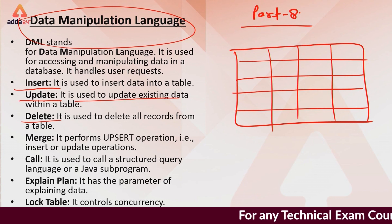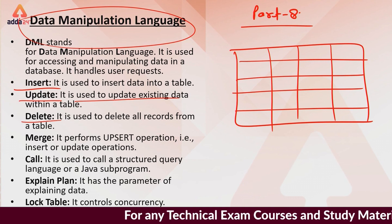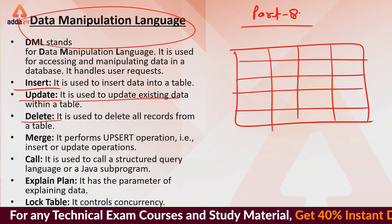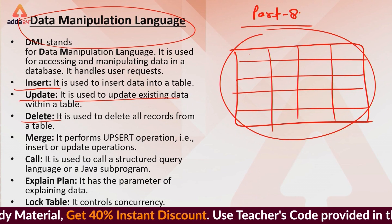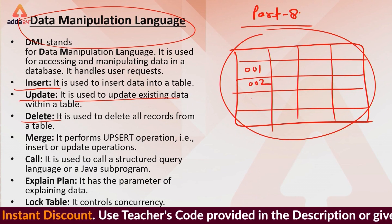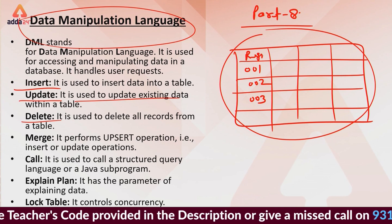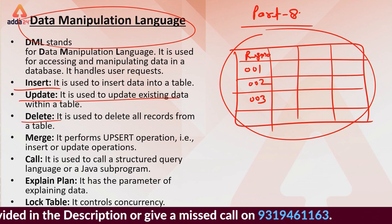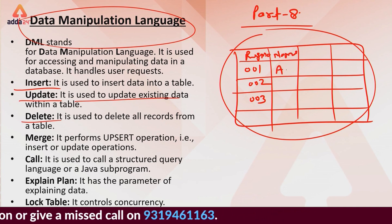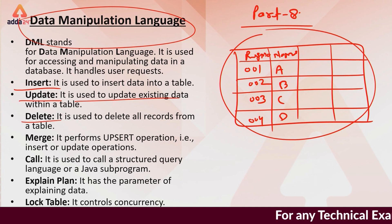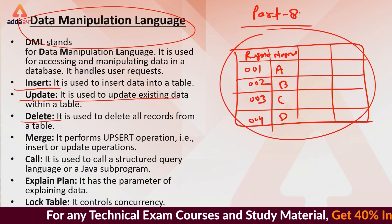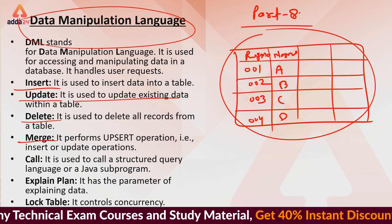With DML you can read data, but when you drop the structure you lose access. You can use it with records such as 001, 002 using a registration number or name. If you need to change a name you can UPDATE it. MERGE is also a command — it is a form of upsert operation.